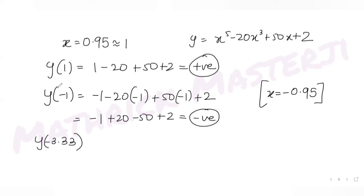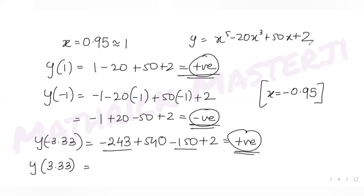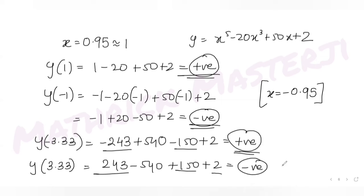At x ≈ -3.33 (approximated as -3): y = (-3)⁵ - 20(-3)³ + 50(-3) + 2 = -243 + 540 - 150 + 2, which is a positive value. At x ≈ +3.33 (approximated as 3): y = 243 - 540 + 150 + 2, giving 395 - 540, which is negative. So the signs keep changing at each critical value.